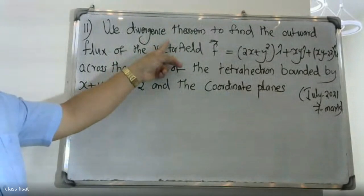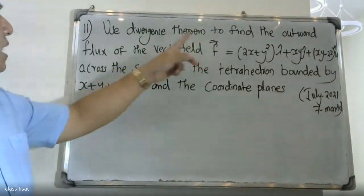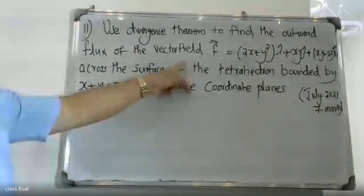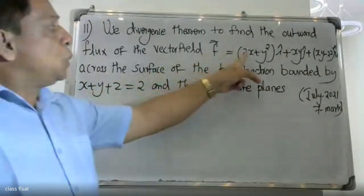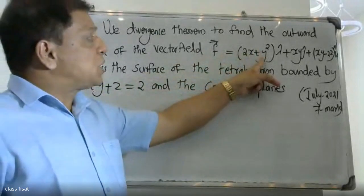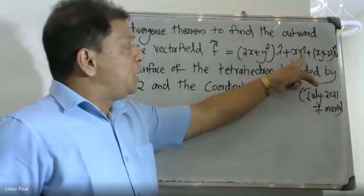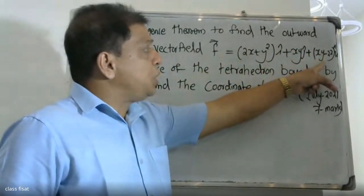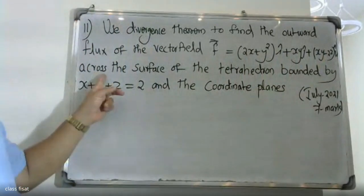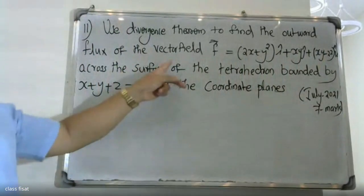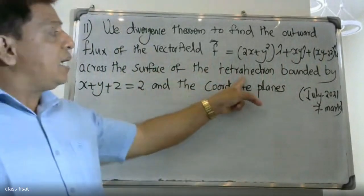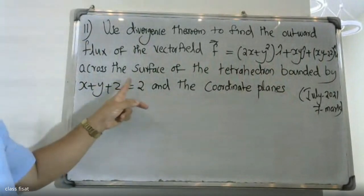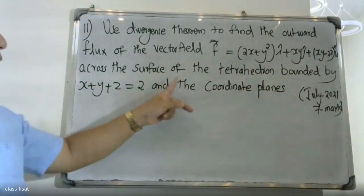Use the divergence theorem to find the flux of the vector field F equal to (2x + y²)i plus (xy)j plus (xy - 2z)k across the surface of the tetrahedron bounded by x plus y plus z equals 2 and the coordinate planes.